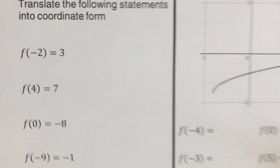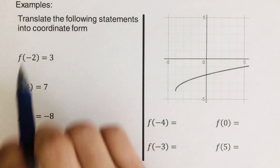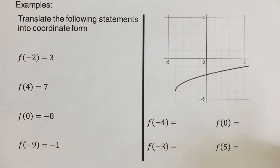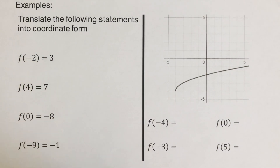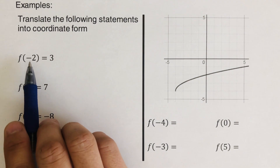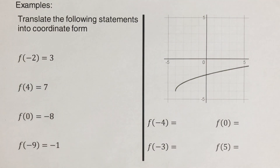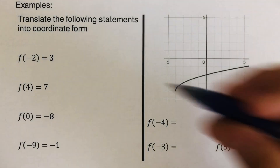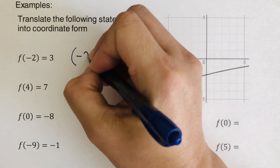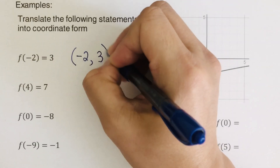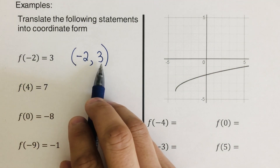Now let's have another example. We're supposed to translate the following statements into their equivalent coordinate form. In this first example, f of negative two is equal to three. Remember, whatever's inside the parentheses is the input, or the x. So to change this into coordinate form, that would be negative two comma three — negative two is the input and three is the output.